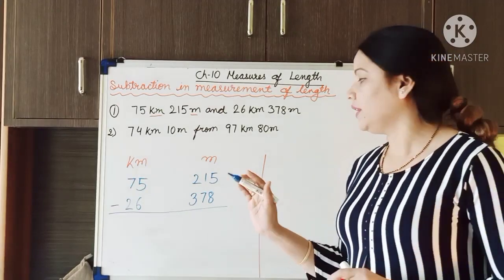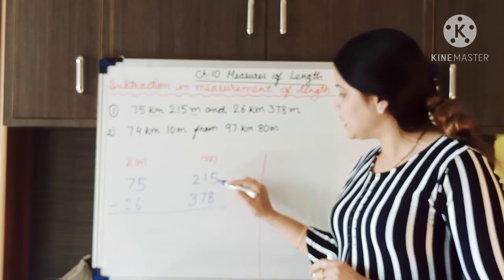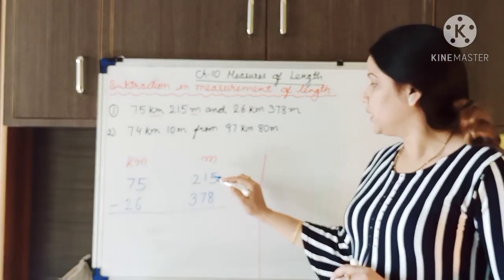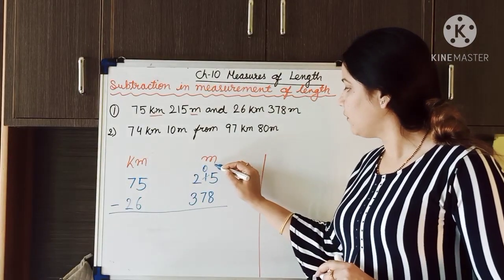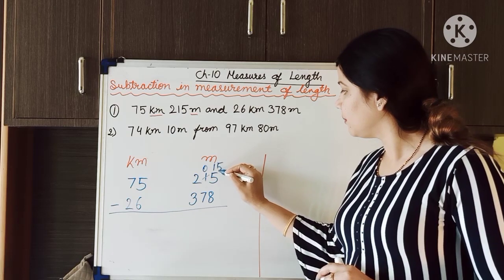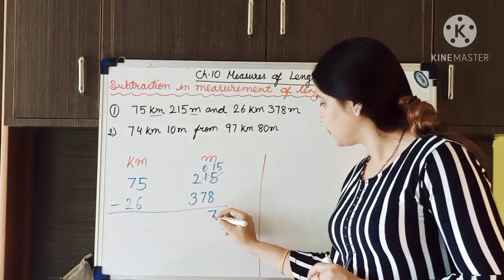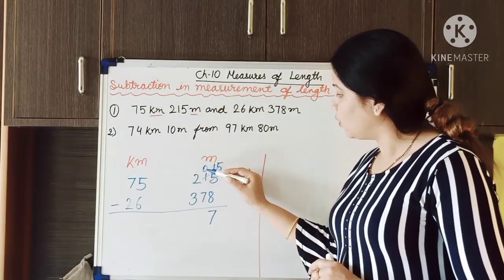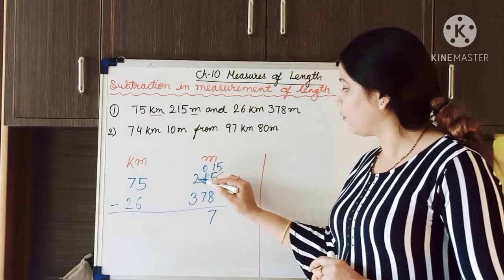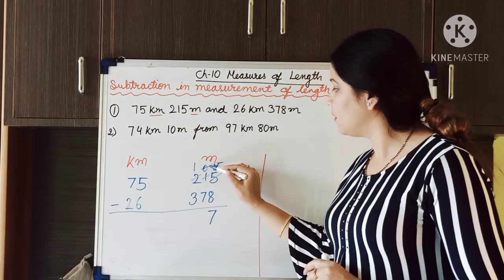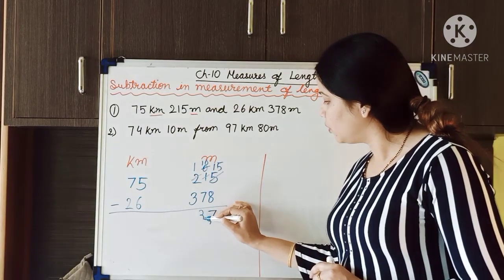Always remember that we have to start our calculation from the smallest unit. Is it possible to subtract 8 from 5? No. So this will borrow 1 from the next place. This will become 0 and this 5 will become 15. Now 15 minus 8 is equal to 7. Now this is 0 — can we subtract 7 from 0? No. So this 0 will borrow 1 from the next place. This will become 1 and this will become 10. Now 10 minus 7 is equal to 3.